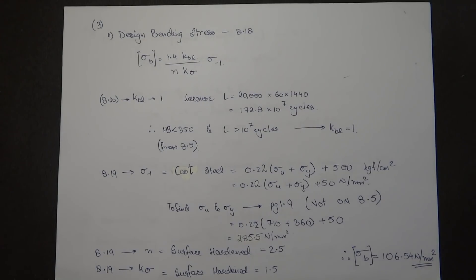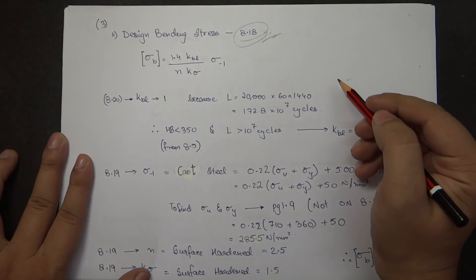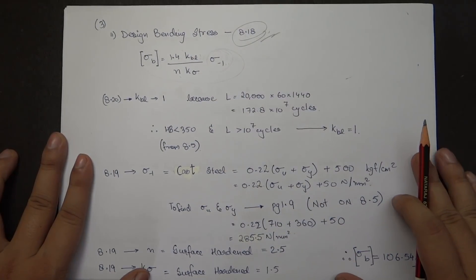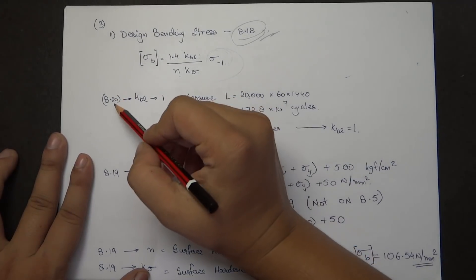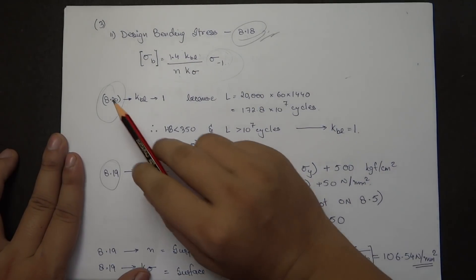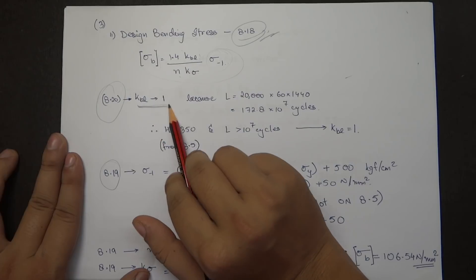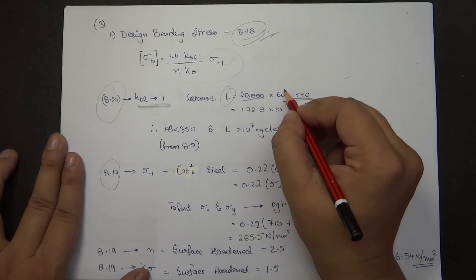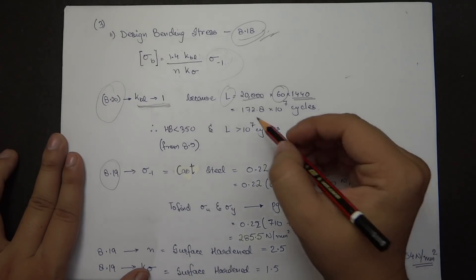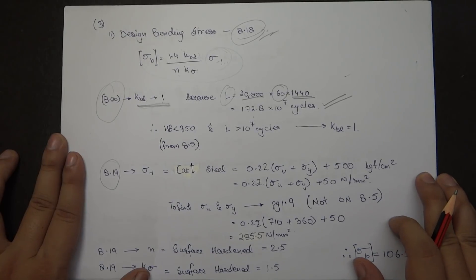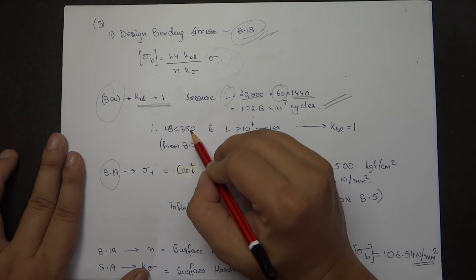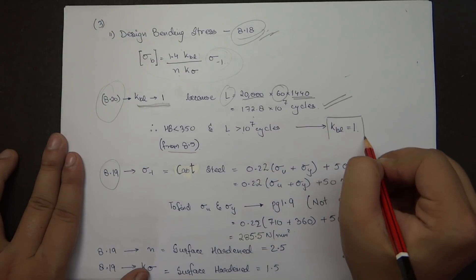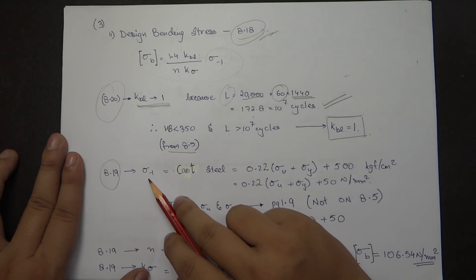The second part of step three is the design bending stress. From page 8.18, the formula is: Sigma_B = 1.4 × K_BL / (N × K_sigma) × Sigma_{-1}. For K_BL, since life is 20,000 hours × 1440 rpm × conversion factor, life in cycles is 172.8 × 10⁷ cycles. Since HB is less than 350 and L is greater than 10⁷ cycles, K_BL equals 1.